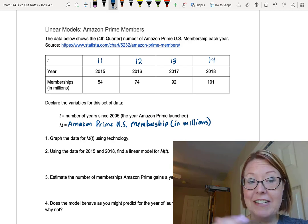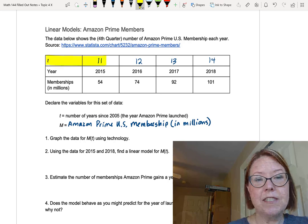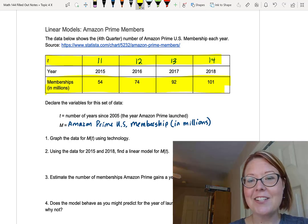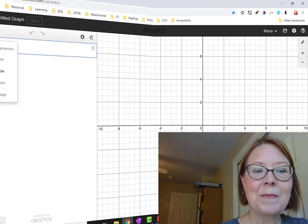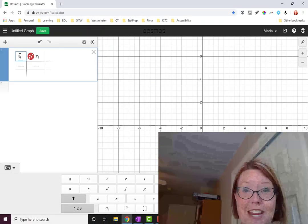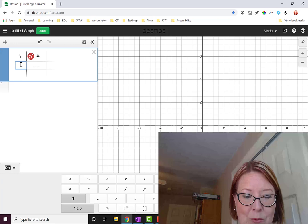Now the first thing we're going to do here is graph this data. We're going to graph the T row for the data that's 11, 12, 13, 14, and the membership in millions, that's the 54, 74, 92, 101. Let's go over to Desmos and do that. I'm going to add my table of data here. In the table, I'm going to change the header row so that it reads T1 and capital M1.